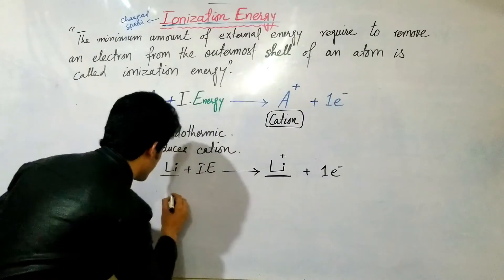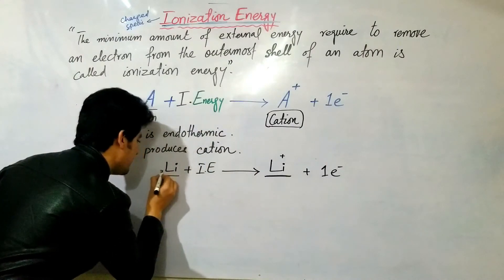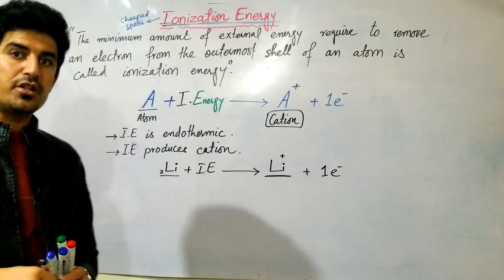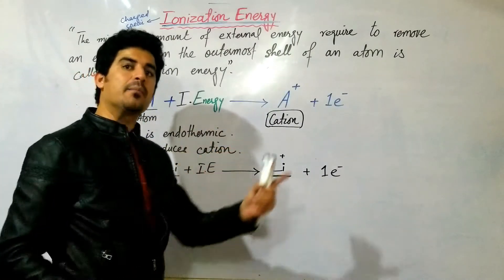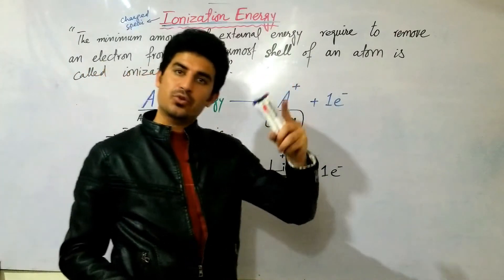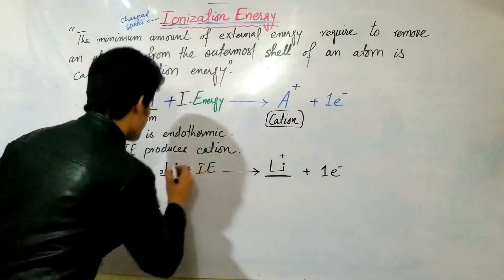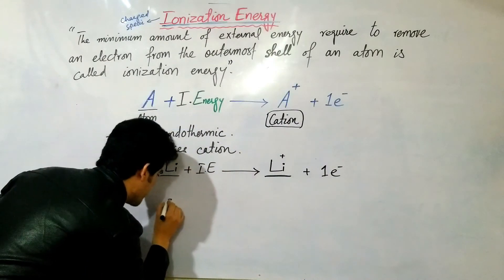This is a lithium atom and the atomic number is 3. The number of protons is 3, and the number of electrons is also 3. This is the atom structure.